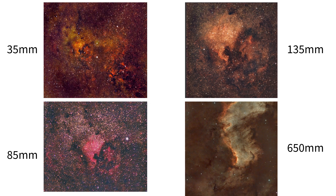Here are all my results side by side so you can compare them. 35 millimeters gives you context; 85 millimeters gives you a balance between context and detail; 135 millimeters gives you drama and more of the nebula's detail; and 650 millimeters with my telescope gives you pure zoomed-in detail. Each serves a different purpose, and your choice depends on your goals and your gear.